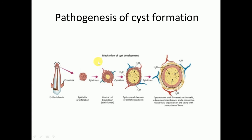This is the pathogenesis of cyst formation. There is an epithelial rest, followed by epithelial proliferation mediated by cytokines, then breakdown of central cells leading to lumen formation, and then cystic expansion due to the osmotic gradient — the fluid is hyperosmolar and draws water inside. Finally, a mature cyst forms with a connective tissue capsule and a central lumen.